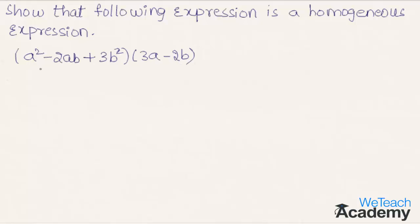Let us multiply this expression with 3a. We get 3a into a squared as 3a cubed, 3a into minus 2ab as minus 6a squared b, and 3a into 3b squared as 9ab squared.